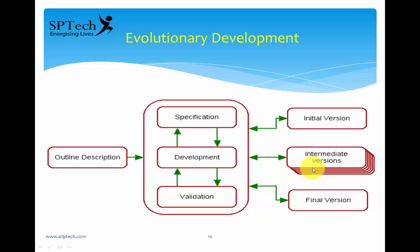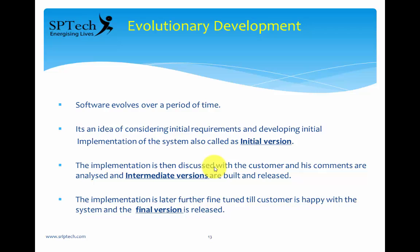After reviewing the intermediate version, the customer may still request more requirements. He might say: now you have the shopping cart and payment gateway, but I also need a discussion forum and customer reviews for products rated on a scale of 1 to 5. You add those requirements and produce the final version of the software. The shopping cart software evolved over a period of time — that is why it is called evolutionary development.